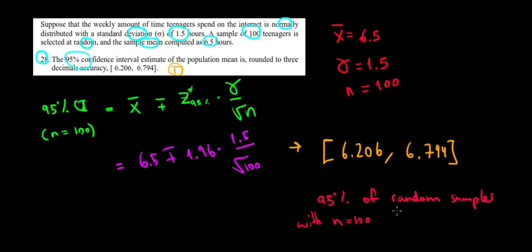we will have the true population mean included in this range. This range includes the true population mean in 95% of random samples with 100 observations each. Hope this makes sense, and we're done.